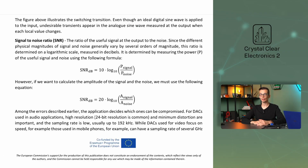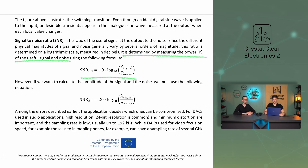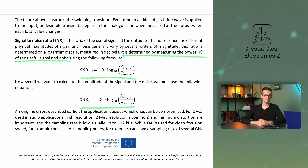It is determined by measuring the power of the useful signal and noise using the following formula. However, if we want to calculate with the amplitude of the signal and noise, we must use the following equation: the SNR measured in decibels is equal to 20 times the log base 10 of A_signal over A_noise.